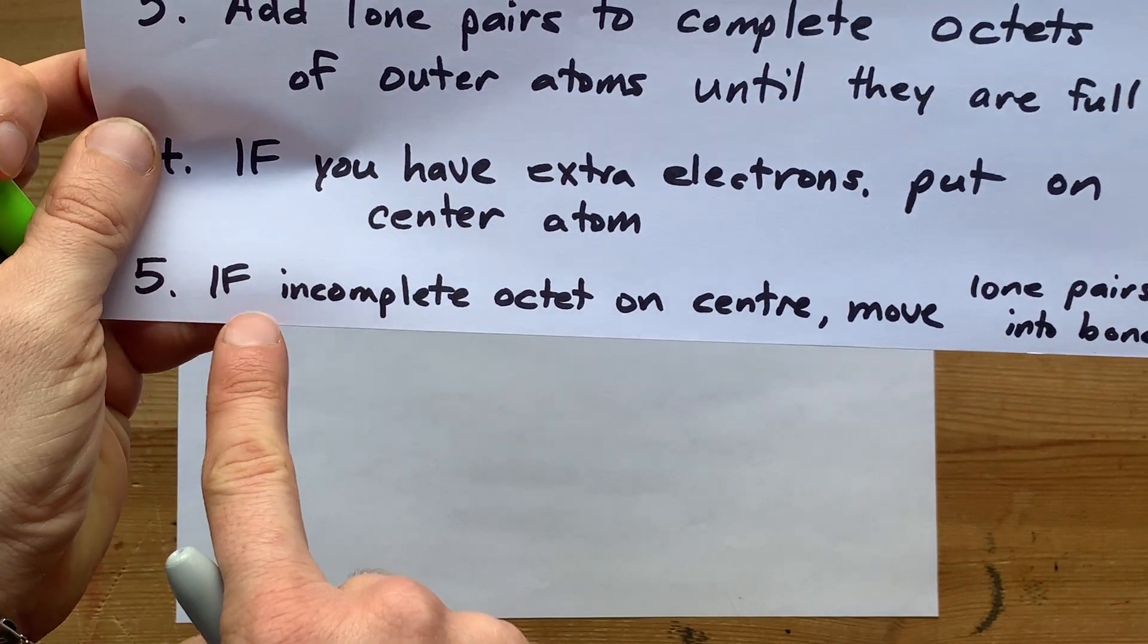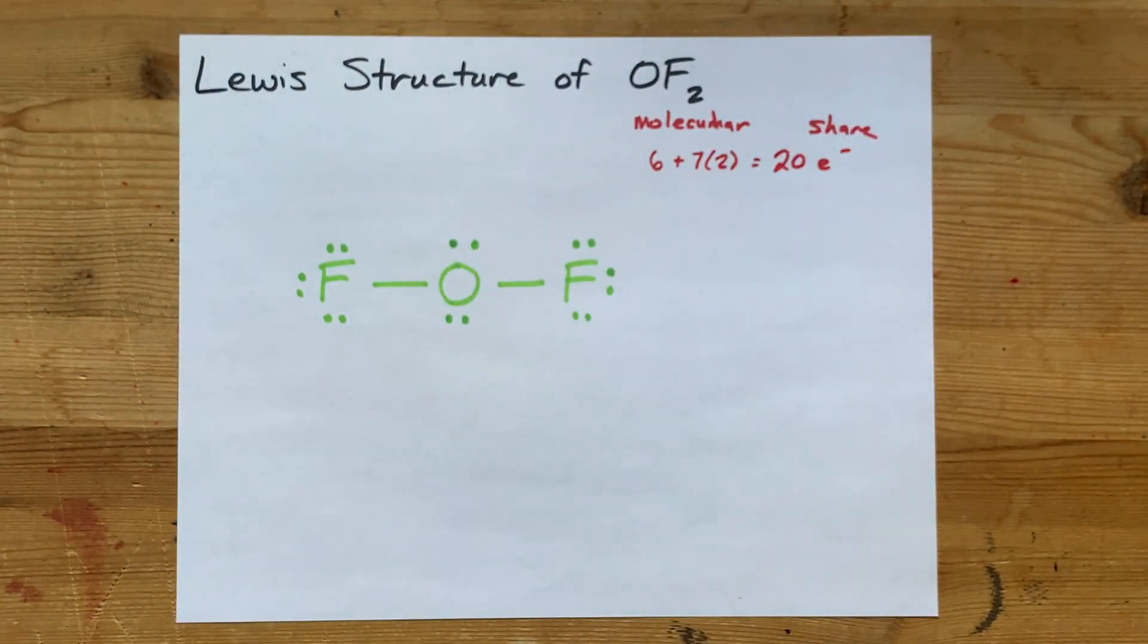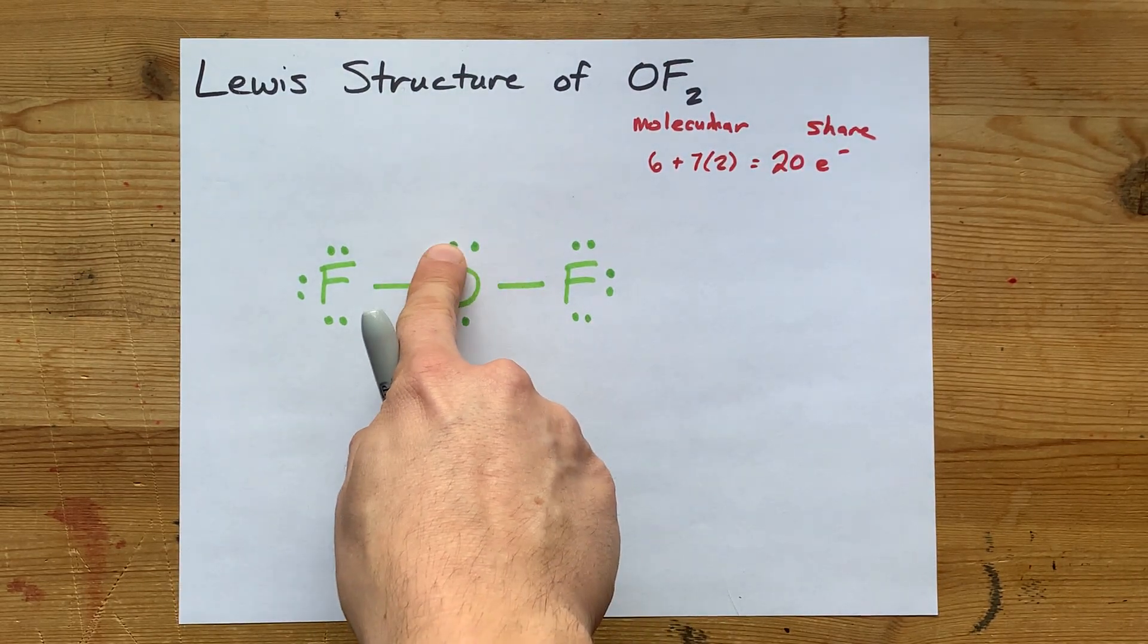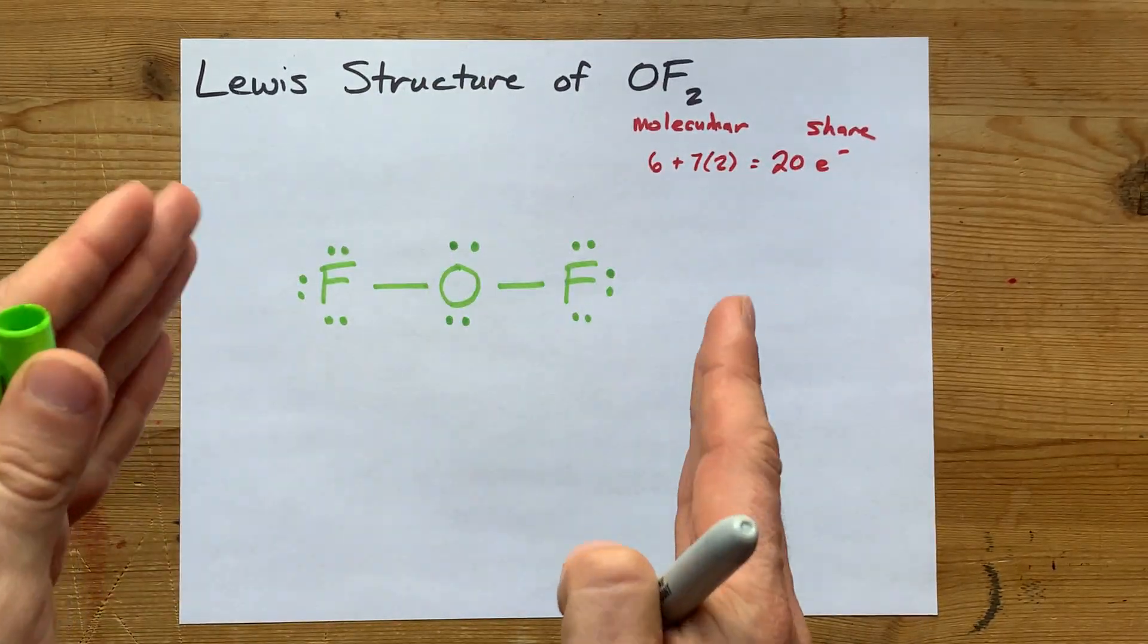And then if you have an incomplete octet on the center atom, you'll move lone pairs into the bonds. Now, this oxygen already has two, four, six, eight electrons. It has a complete octet. This is done. It's over. We did it.